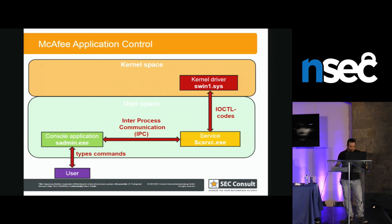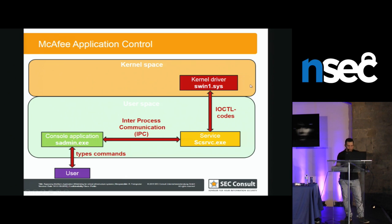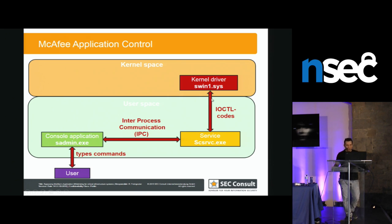Here's a picture of the different components. As the user, you sit in front of the computer and interact with the sadmin application, typing commands. There's also a service running with system privileges — responsible for generating the whitelist and other user-space tasks. These two communicate via inter-process communication using named pipes. Sadmin is just the front end, passing commands with the password to the service. Then there's a kernel driver that enforces protections like write protection and application whitelisting, communicating via IOCTL codes.